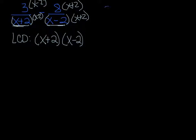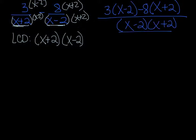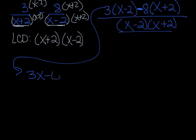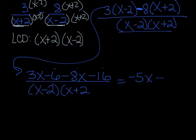Let's multiply that out. We've got 3 times (x minus 2) minus 8 times (x plus 2), all over our common denominator of (x minus 2)(x plus 2). We don't ever want to multiply the bottom part out — just leave it factored. But the top part, because we've got a minus in between, we want to clean it up. We distribute the 3 and get 3x minus 6. Then we distribute the negative 8 and get minus 8x minus 16. Make sure you remember that's a negative 8 being distributed. Then combining like terms: 3x and minus 8x gives negative 5x, and minus 6 and minus 16 gives negative 22.